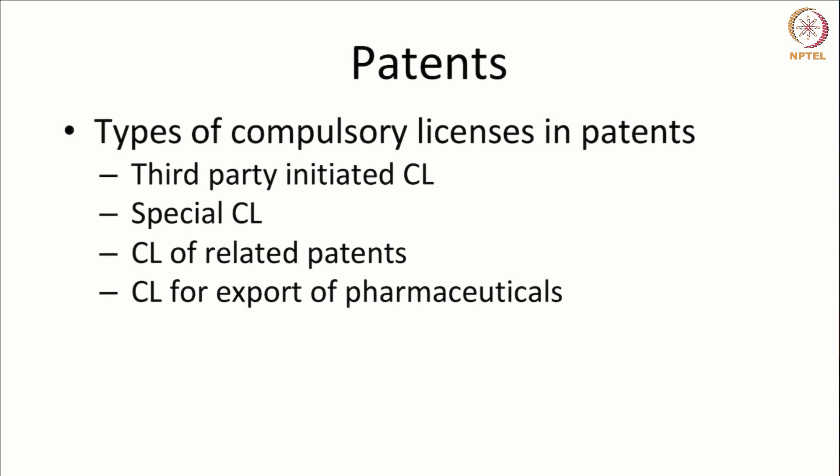Under the Patents Act, there are four types of compulsory licenses. There is a third-party initiated or market-initiated compulsory license. There is a special compulsory license where the government can grant compulsory licenses in case of extreme urgency or emergency. There is also a compulsory license of related patents, where a person needs another technology or patent without which he cannot put his own technology into effect. And there is a special compulsory license for export of pharmaceutical products to other countries.